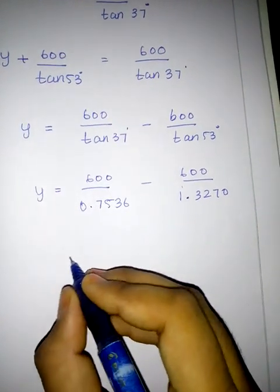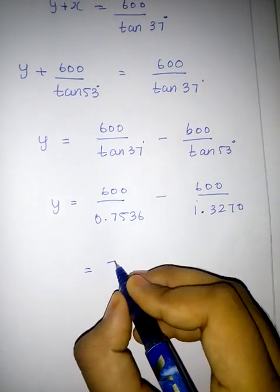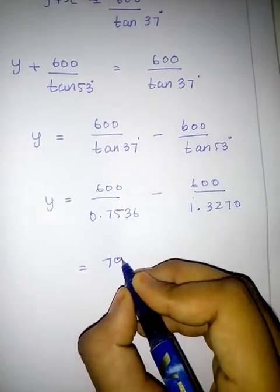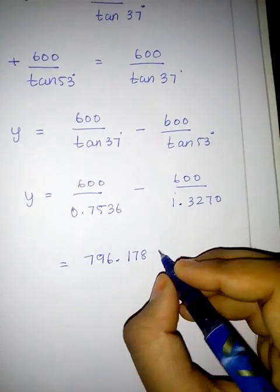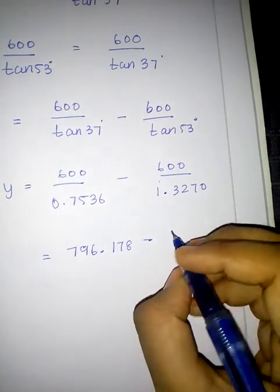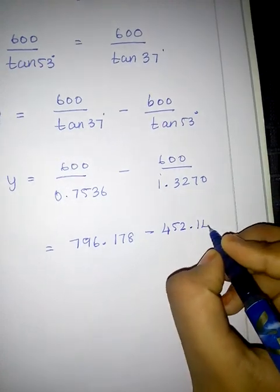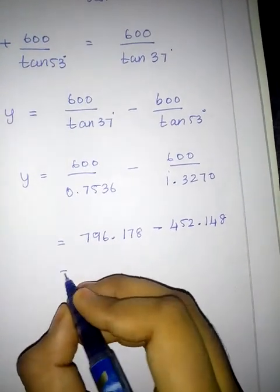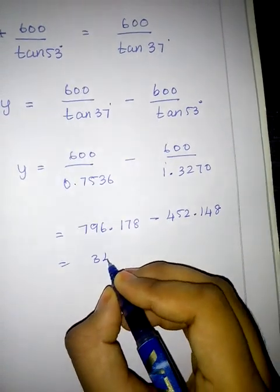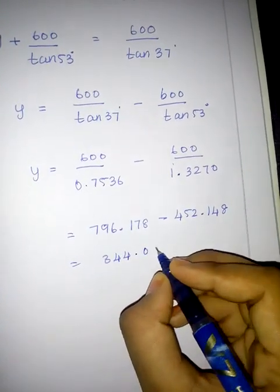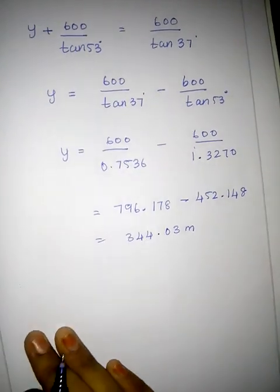x is equal to 796.178 minus 452.148, which gives approximately 344.03 meters.